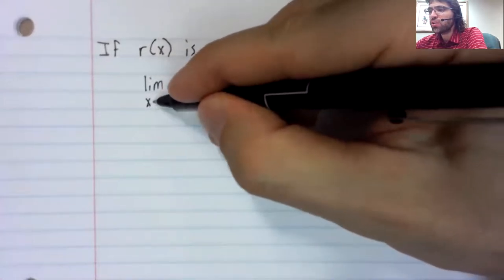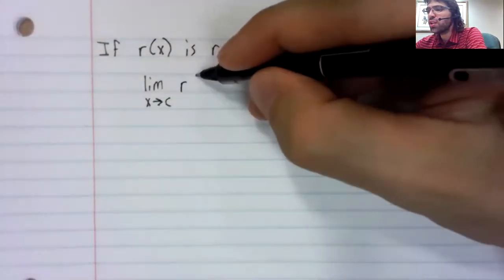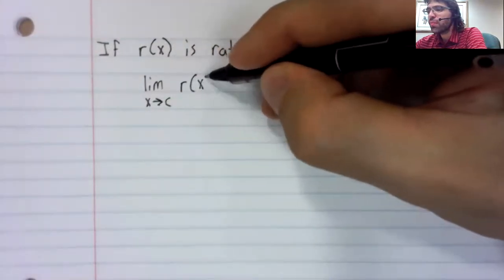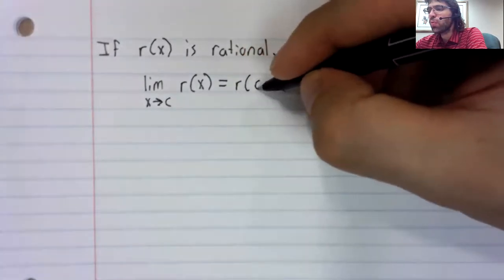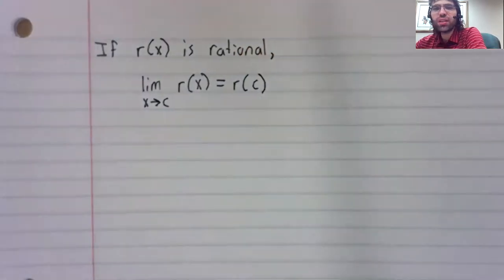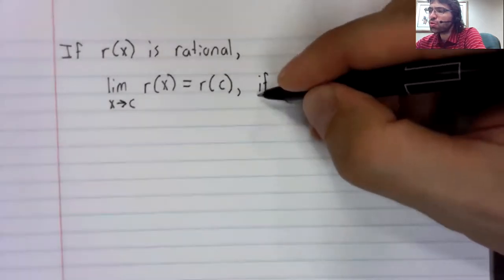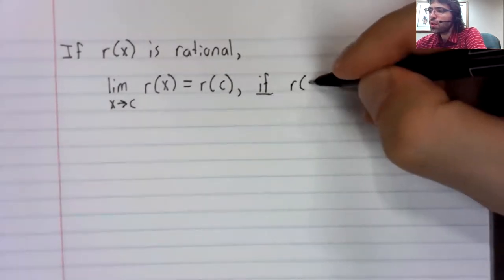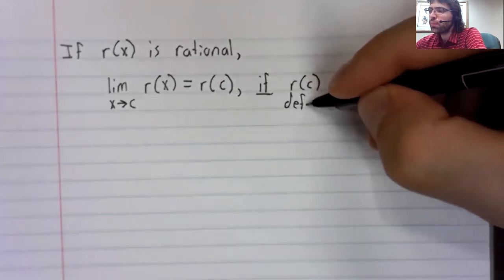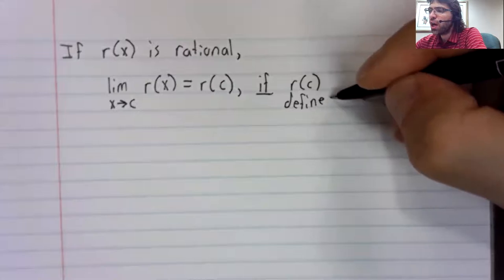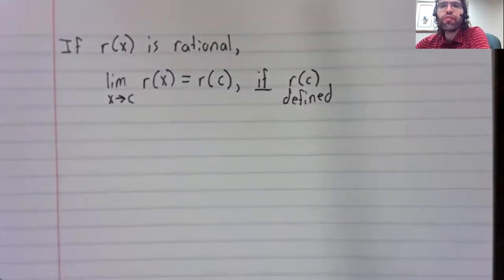then the limit as x approaches c of r of x equals r of c. But to use this result, we need to make sure that r of c is actually defined.